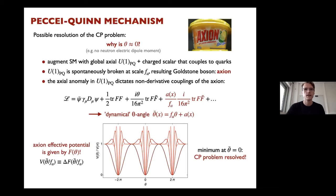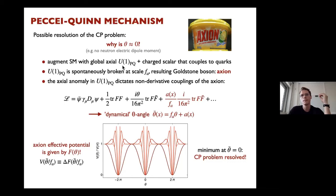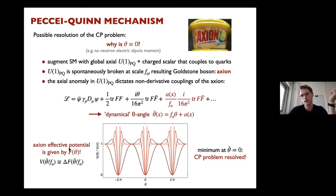Briefly, another application: axions. In the Peccei-Quinn mechanism to solve the strong CP problem, one adds a global axial U(1) symmetry with a scalar coupled to quarks. This U(1) is spontaneously broken, producing a Goldstone boson — the axion. Since this U(1) is anomalous, the effective potential of the axion is completely determined by the anomaly, and the axion enters the Lagrangian exactly like the theta parameter, giving a dynamical theta angle.